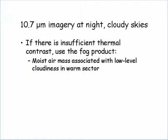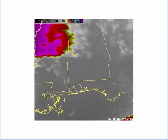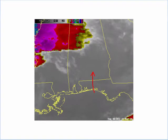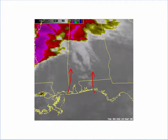Now let's look at cloudy skies at night. Sometimes we have insufficient thermal contrast, and the solution is to use the fog product. Be careful to make sure that the moist air mass is indeed co-located with the low-level clouds and in the warm sector, and we'll verify that by looking at the surface obs. Here's the 10.7 micron channel — there's actually moisture return occurring, but because the thermal contrast is so low, it's very, very subtle. You can barely see it — the warmer temperatures advecting towards the north are associated with the low-level clouds, but very subtle.